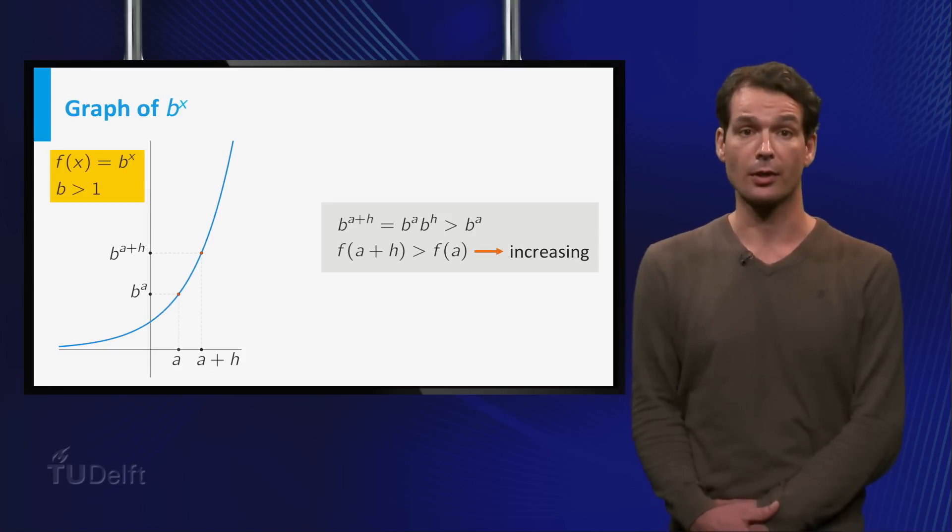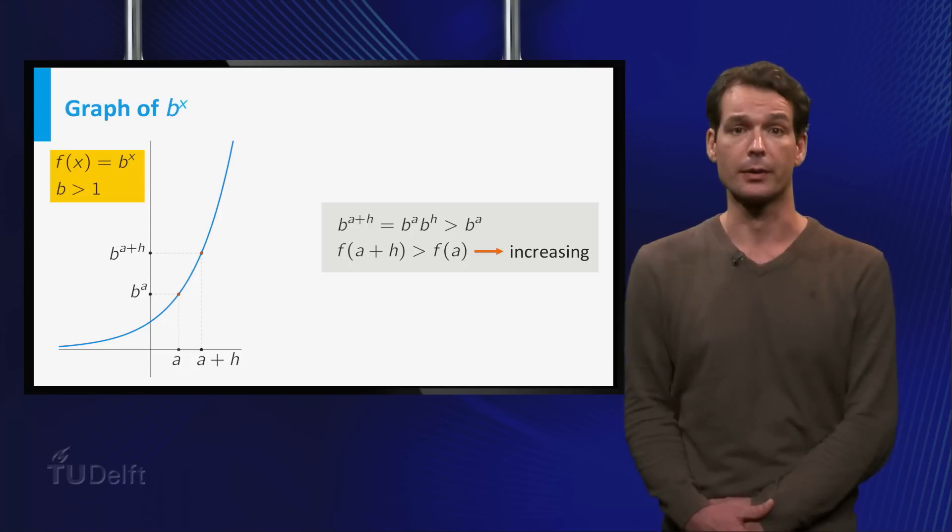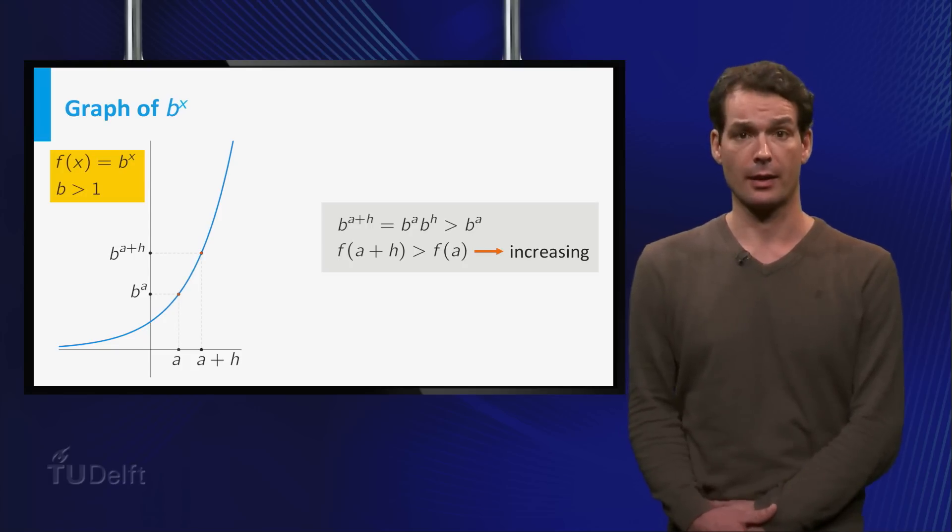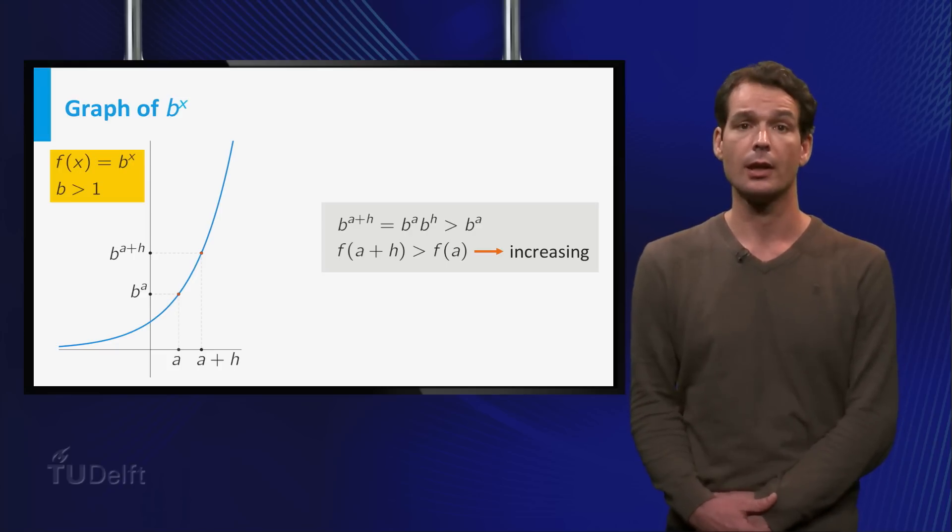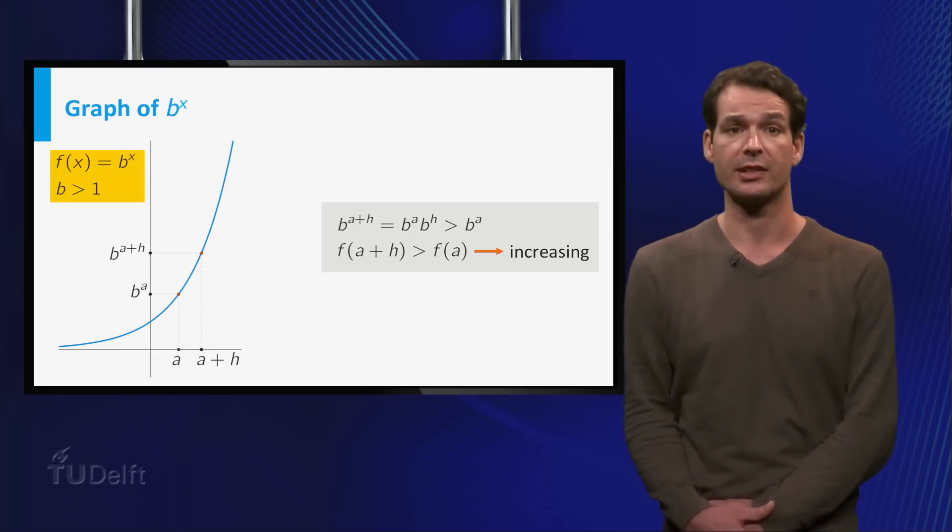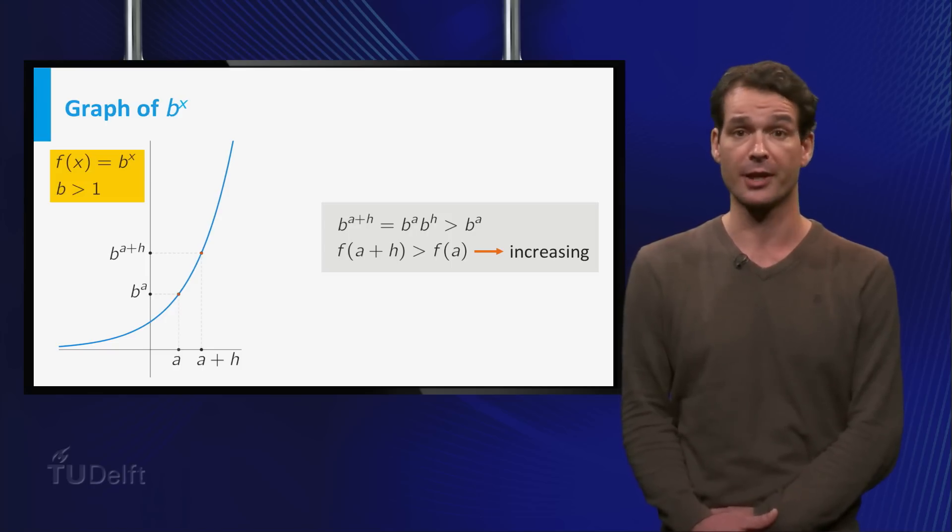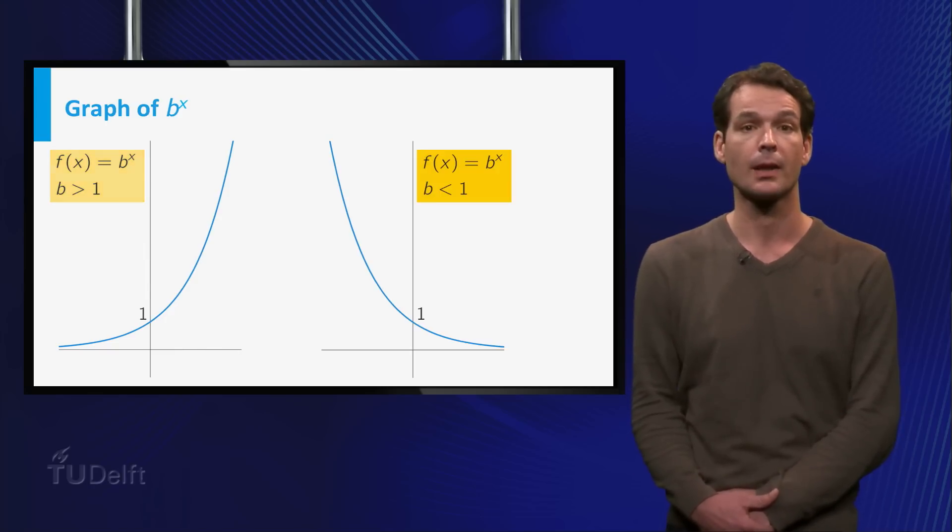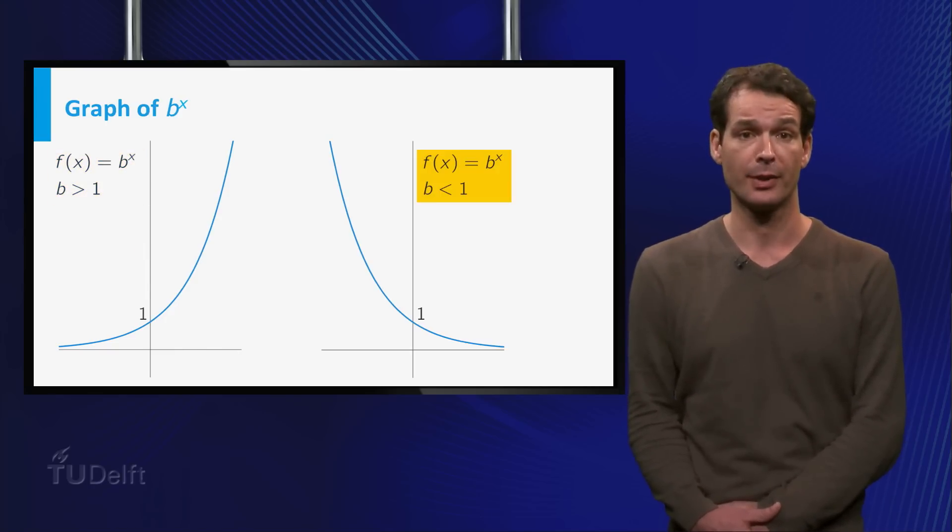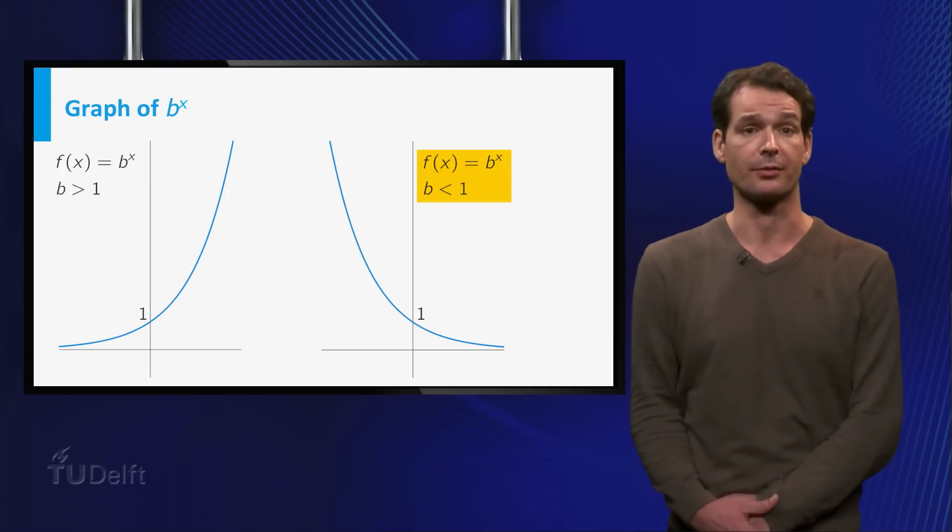Let's have a look at the graph of b to the power x. First we assume that b is greater than 1. We see that f is an increasing function since, for positive h, b to the power a plus h equals b to the power a times b to the power h greater than b to the power a. In the same way, we find that for b smaller than 1, the function b to the power x is a decreasing function.